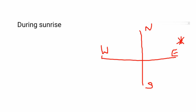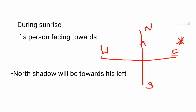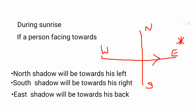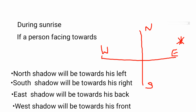In the morning, or during sunrise, we know that the sun rises in the east, so the shadow will always be formed towards the west. Suppose a person is facing north — his shadow will be formed towards the west, that is to the right side of him. If he is facing east, towards the sun, his shadow will be formed to the west, that is towards his back. And if he is facing west, his shadow will be formed in front of him.